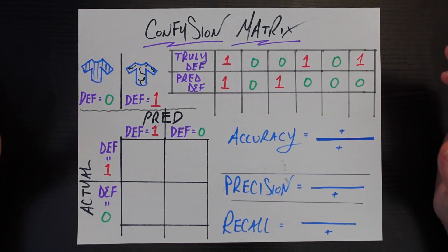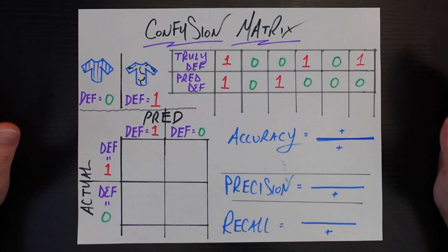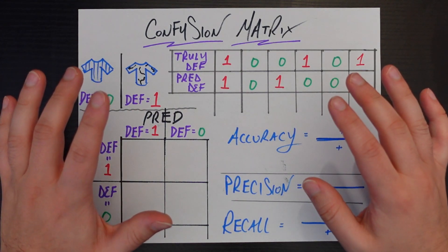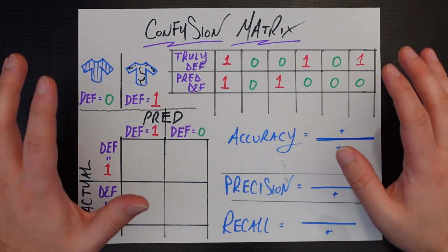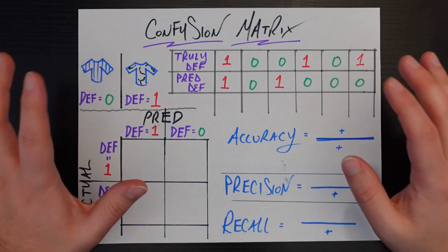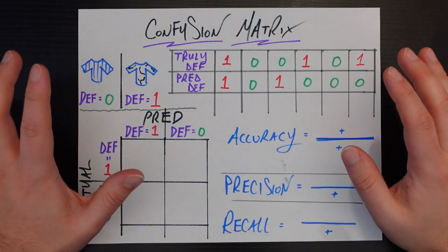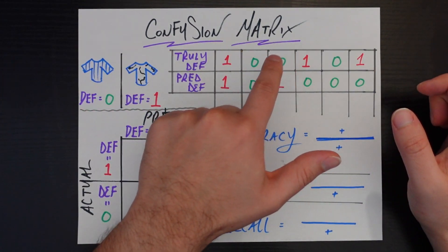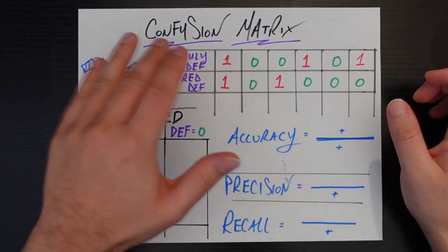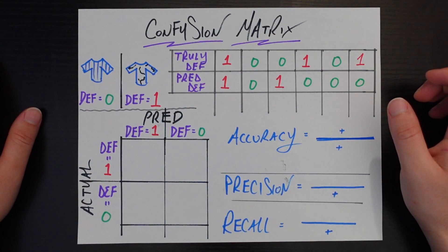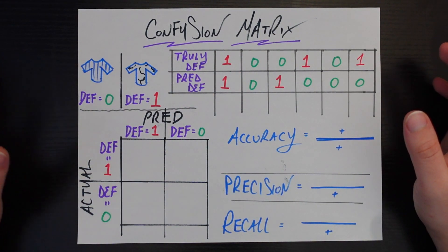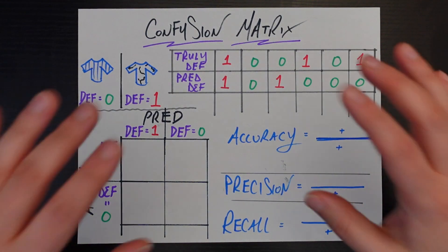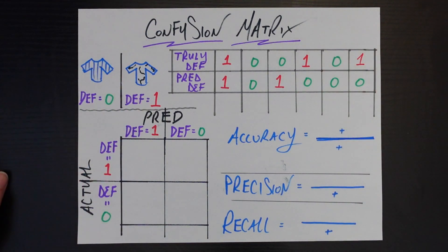Hey everyone, welcome back. So today we're going to be talking about a topic in data science that we honestly should have talked about a really long time ago on this channel. But the good news is that even though this topic, the confusion matrix, sounds confusing, it's actually pretty easy breezy in terms of the topics we're going to learn in data science. And so it shouldn't take long, just this one page for you today.